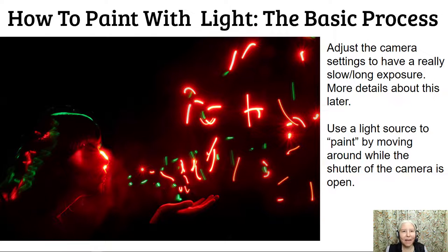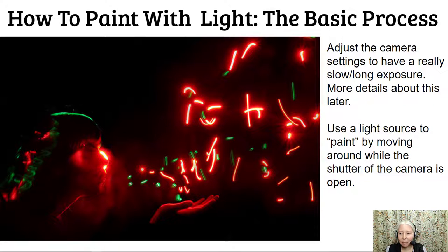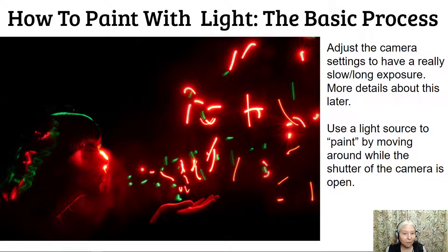How to paint with light — the basic process. Adjust the camera settings to have a really long exposure. I'll give you more details about this later. Use a light source to paint by moving around while the shutter of the camera is open. You can see in this photo that maybe more than one person was in the background holding different light sources.